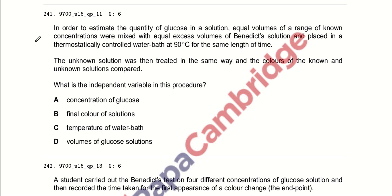In order to estimate the quantity of a glucose solution, equal volumes of a range of known concentrations were mixed with equal excess volume of Benedict's solution and placed in a thermostatically controlled water bath at 90 degrees centigrade for the same length of time. The unknown solutions were used in the same way and the colors were compared. What is the independent variable in this procedure? Concentration of glucose must be the independent variable because all other things are dependent upon it. So, option A is the right answer.